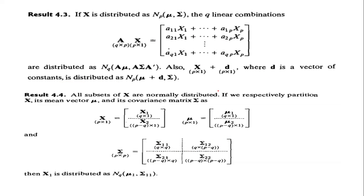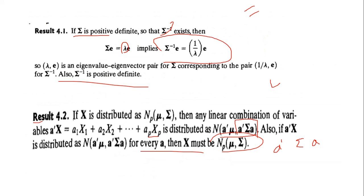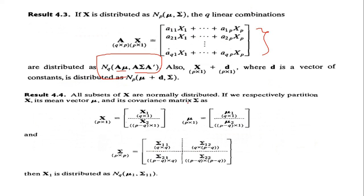If x is distributed as normal with p components mu and sigma, then q linear combinations — expressed as a matrix A times x — are distributed as multivariate normal with q components, mean A*mu and covariance A*sigma*A'. Note: in the previous scalar result we had a'*sigma*a, but here for the matrix combination we have A*sigma*A'.